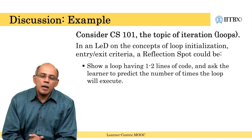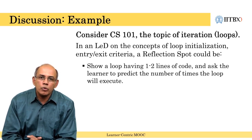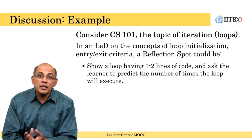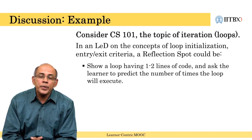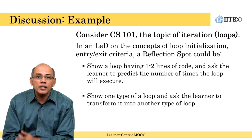Continuing with the same example, another reflection spot could be to show one or two lines of loop code and ask the learner to predict the output. A third type of reflection spot could be to show one type of loop and ask the learner to think about how it can be transformed into another type of loop. In this way, for the same topic of comparing different types of loops, multiple reflection spots can be introduced in the LED.